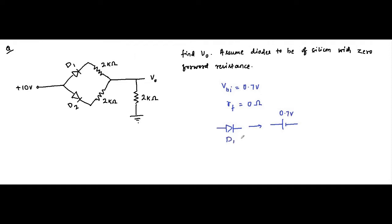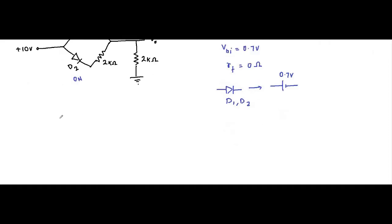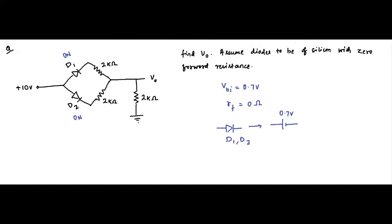Next, finding out the state of the diodes — whether they are on or off. Both diodes D1 and D2 have their P ends connected to the positive 10 volt potential and their N ends connected to ground, which is 0 volt. So both D1 and D2 are on. If we redraw the circuit it will look like this.